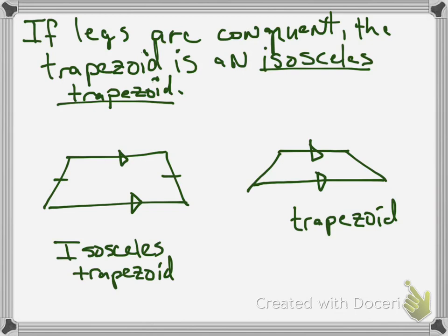Next. So, if we put together, if the legs are congruent, then the trapezoid is an isosceles trapezoid. So if those sides are congruent, if the non-parallel sides are congruent, then it's called an isosceles trapezoid. Otherwise, it's just a trapezoid.